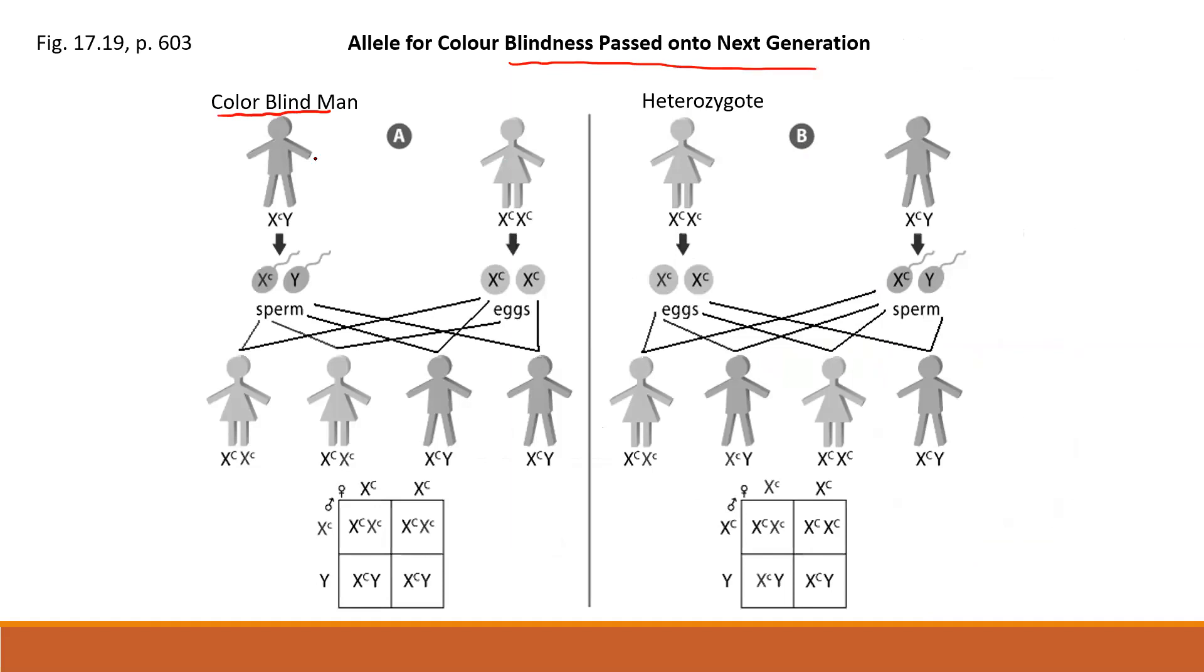If the man is colorblind, and this is on Figure 1.9 page 603, man's colorblind marries a normal woman. We break up the gametes into the Punnett square and we see here that males can pass the X-linked recessive trait only to their daughters.